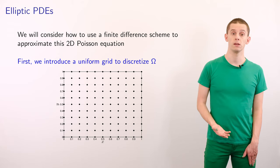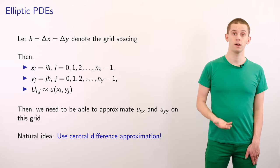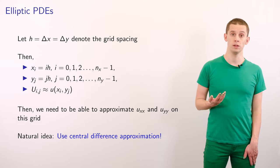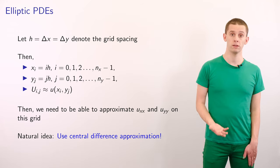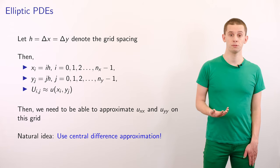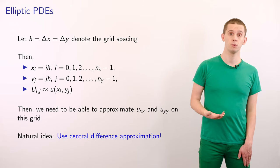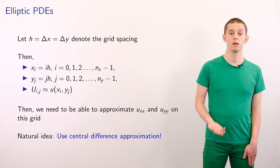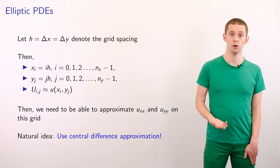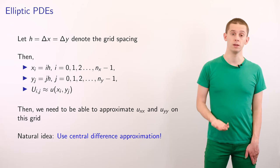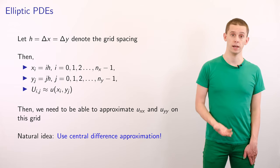So first we'll introduce a uniform grid to discretize omega. Let's define h to be equal to the grid spacing delta x and delta y, and we'll just take these two spacings to be equal. Then we'll define xi to be i times h to be the position of the i-th x-coordinate, yj to be j times h, and we'll define capital U of i and j to be our approximation to our solution evaluated at xi and yj.